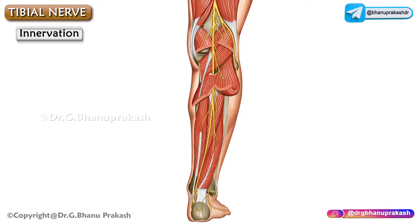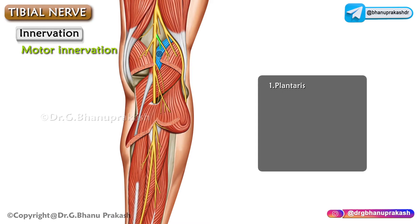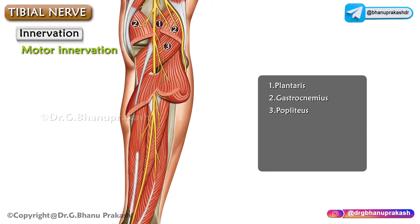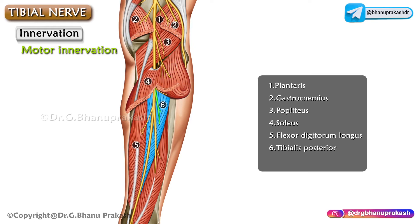Regarding motor innervation: in the popliteal fossa, the tibial nerve innervates plantaris, gastrocnemius, and popliteus. In the leg, it gives innervation to the soleus (deep part), flexor digitorum longus, tibialis posterior, and flexor hallucis longus.